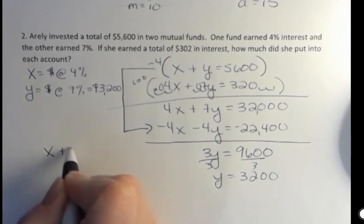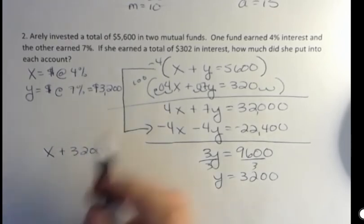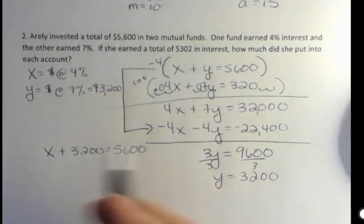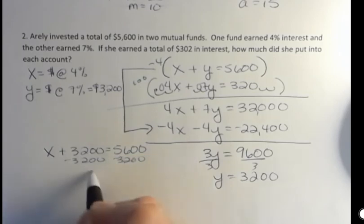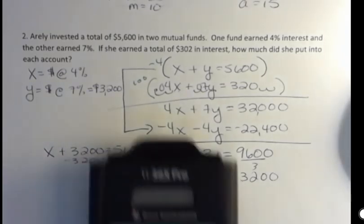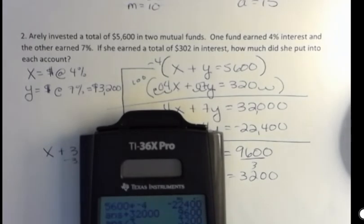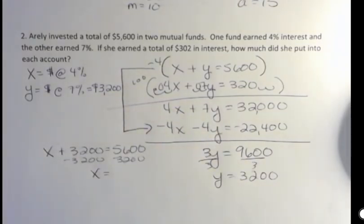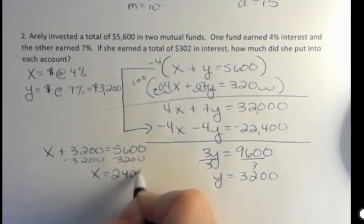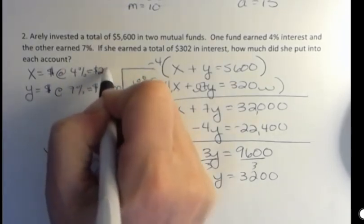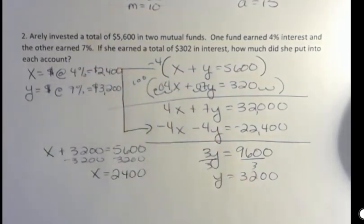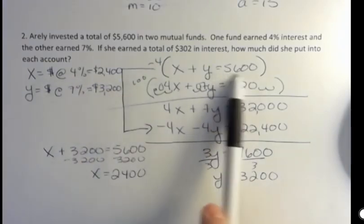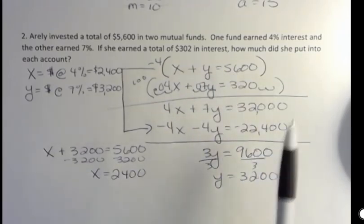then if she put $3,200 into the y account, and she invested $5,600 altogether, then how much did she put into the other account? And that is 5,600 minus 3,200 is 2,400. So she put $2,400 into the 4% account. And she put $3,200 into the 7% account for a total of $5,600 invested. And the interest she earned was $320.